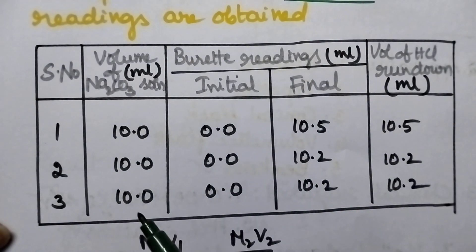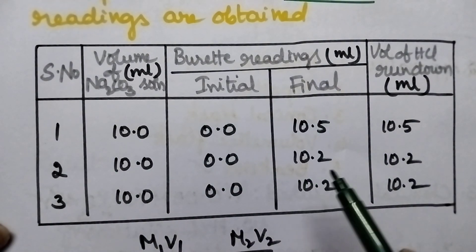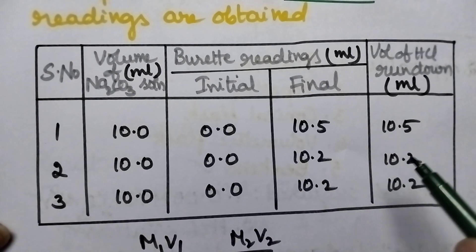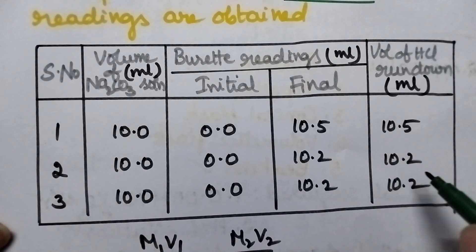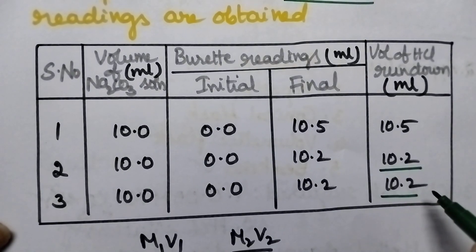Initially the titration is done in order to measure the volume of HCl rundown and the same titration will be repeated until 2 concurrent readings are obtained.